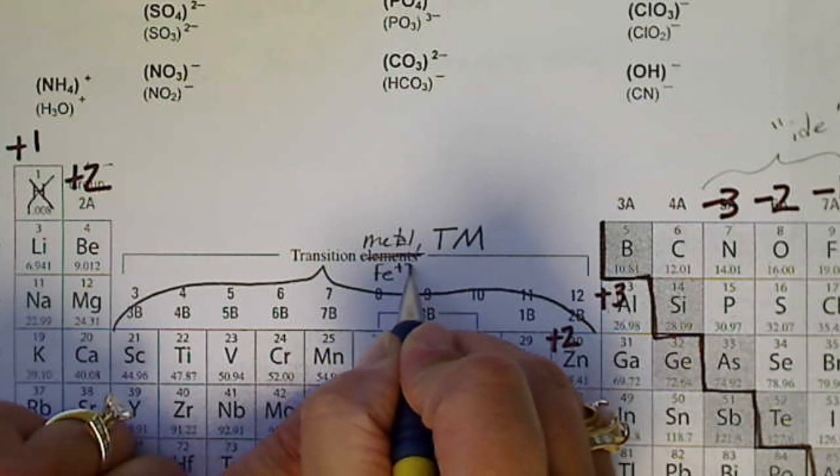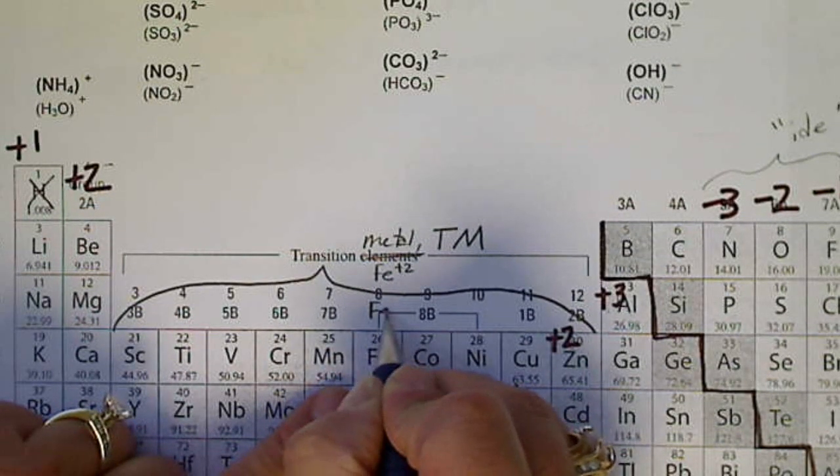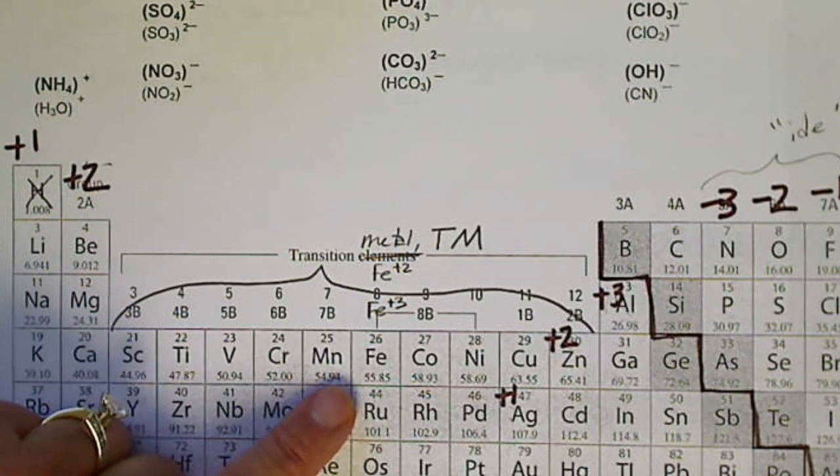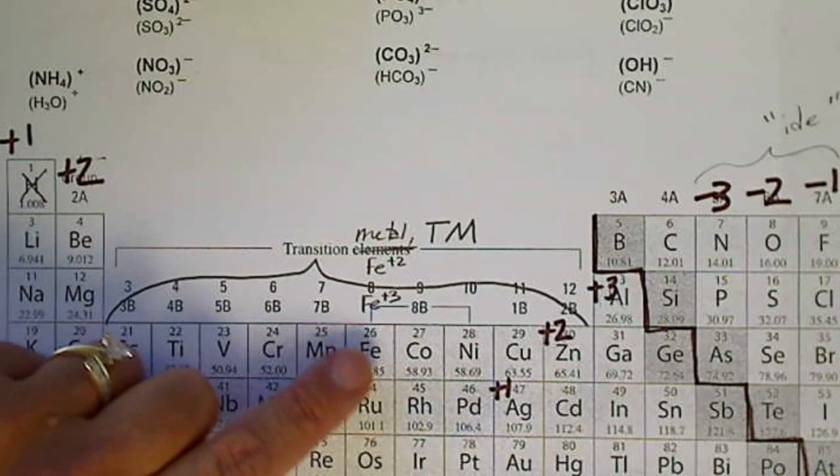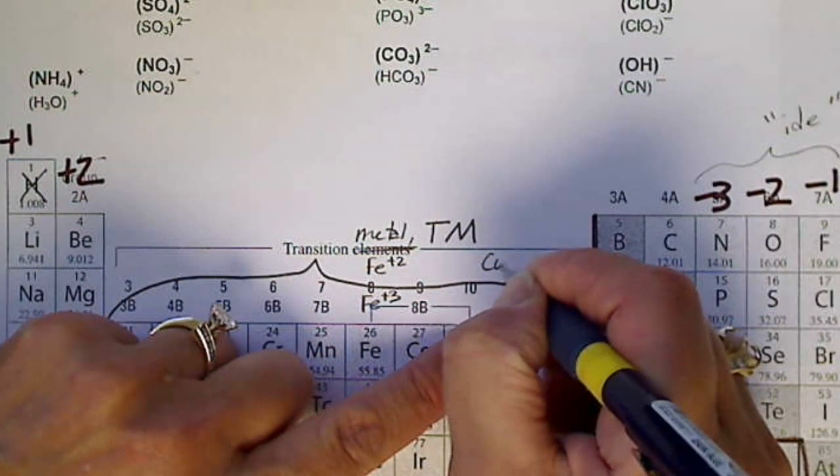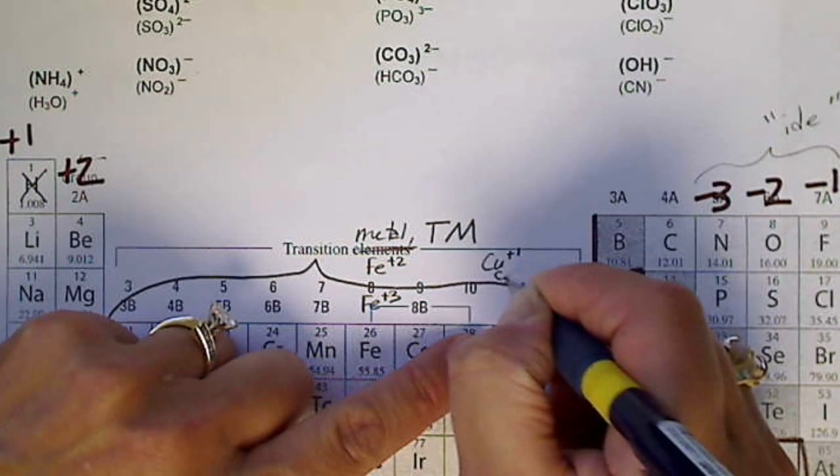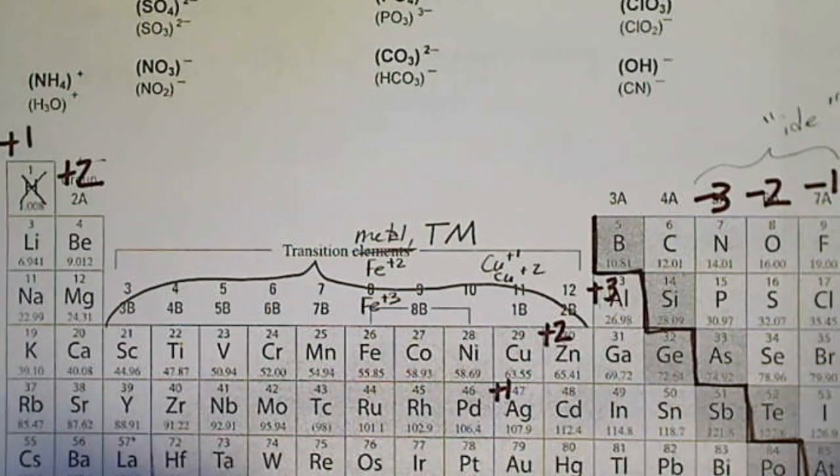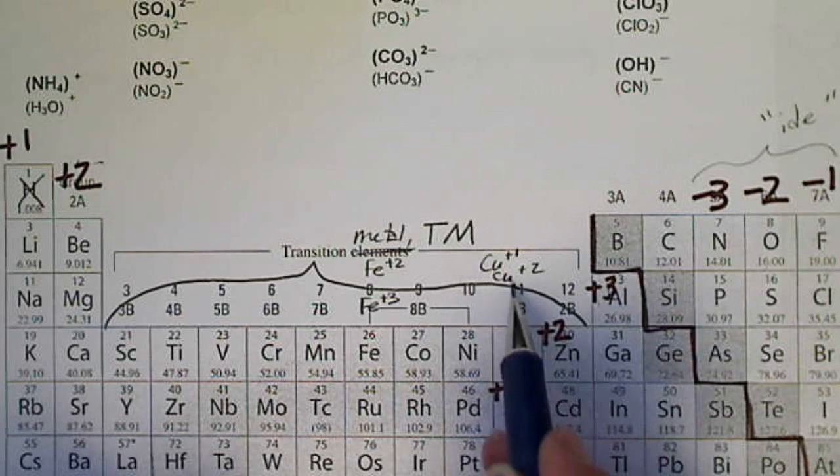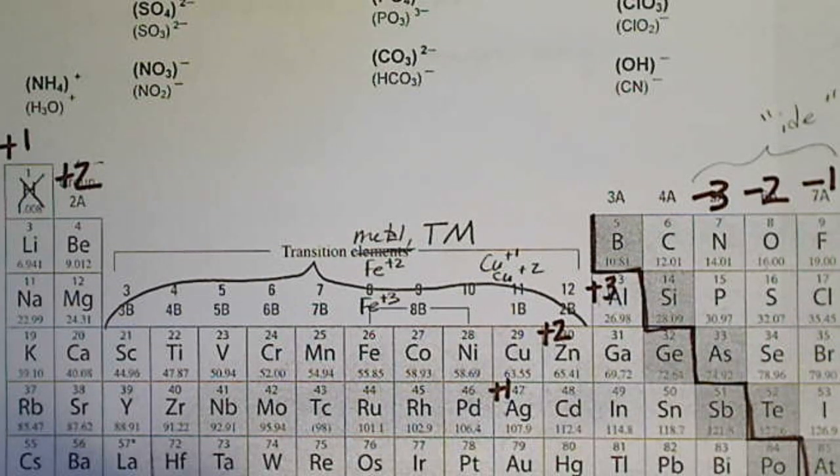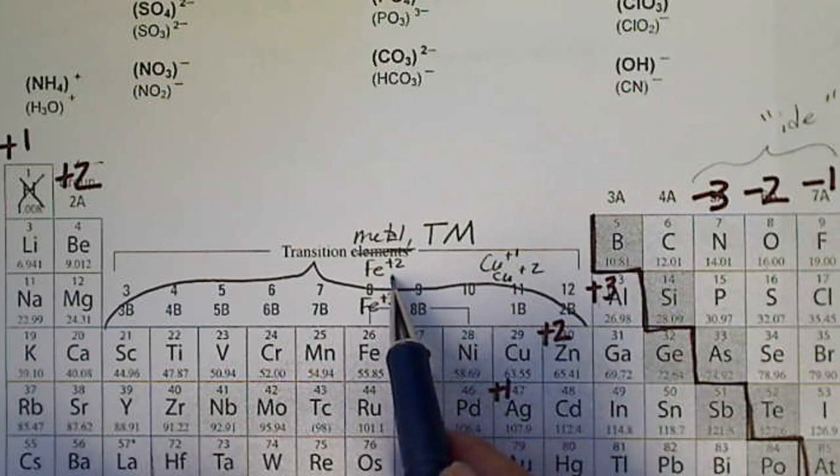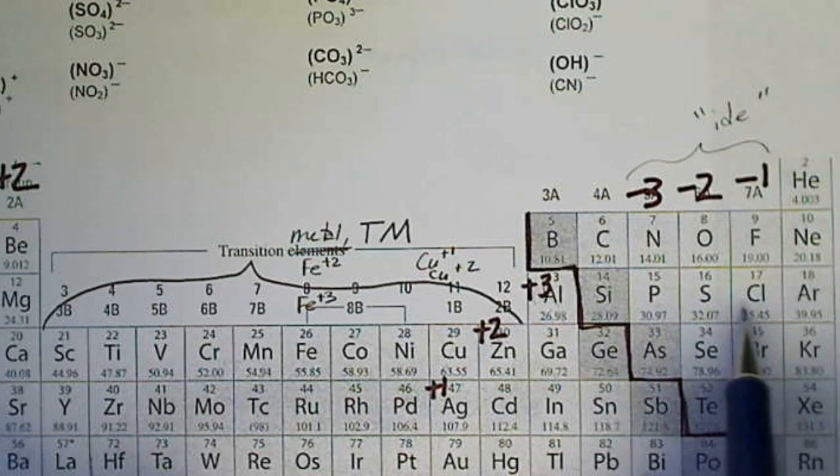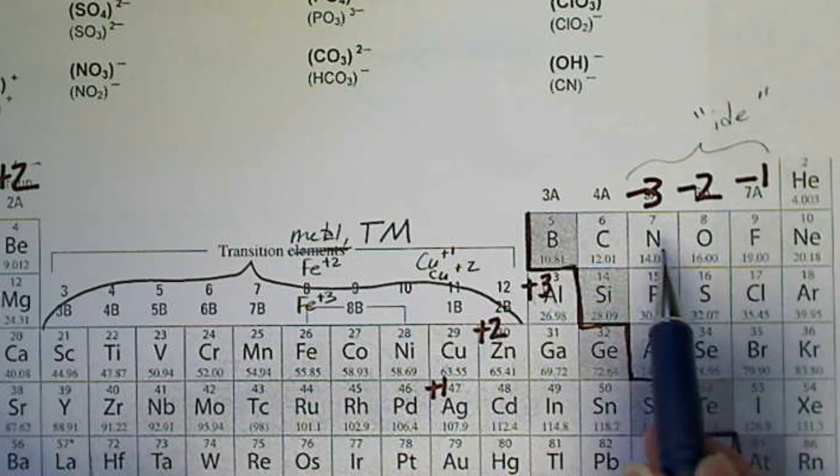So for example, iron can be a plus 2, or iron can be a plus 3, for reasons that we don't need to know. Copper can be a plus 1, or copper sometimes can be a plus 2. So we're not going to have to remember this, but I'm just going to show us that the charges still cancel to zero. So iron plus 2 can get together with chloride, or oxide, or nitride.